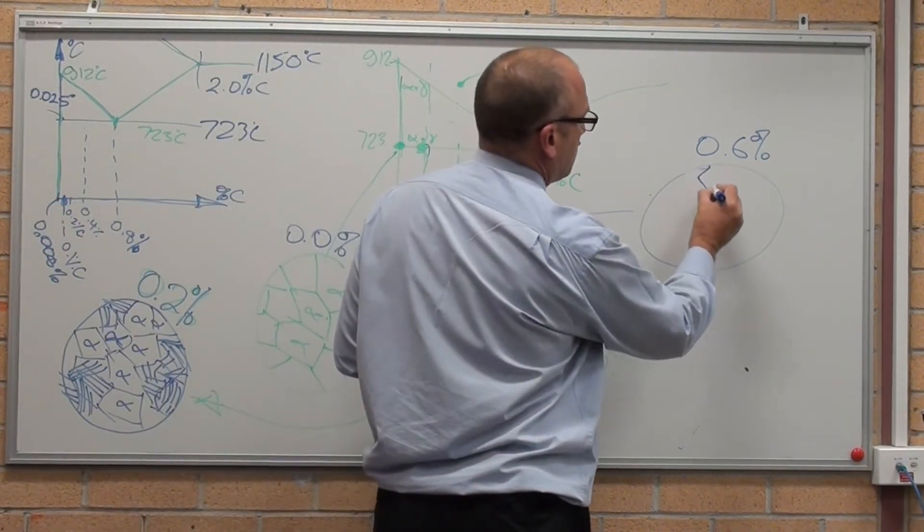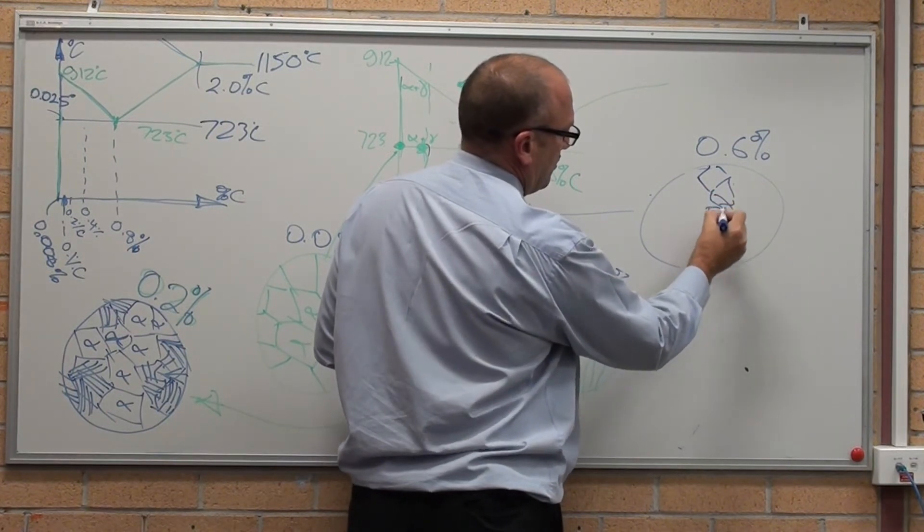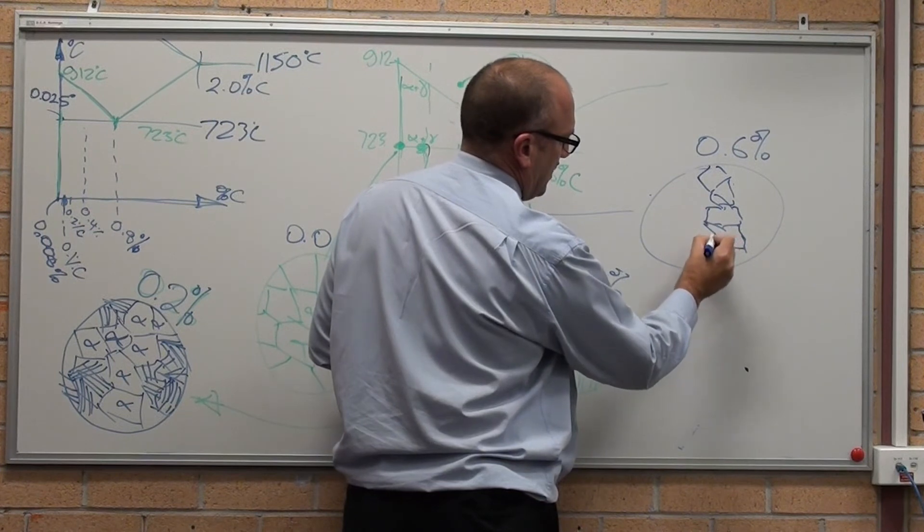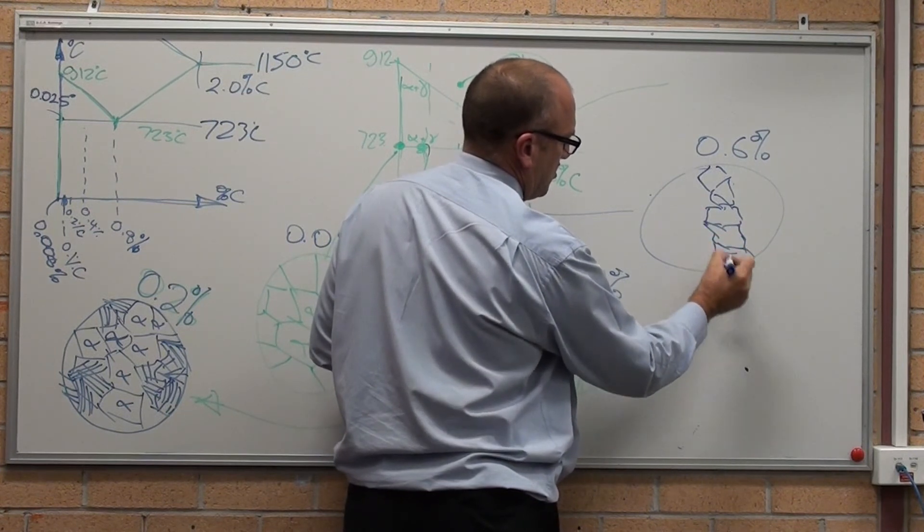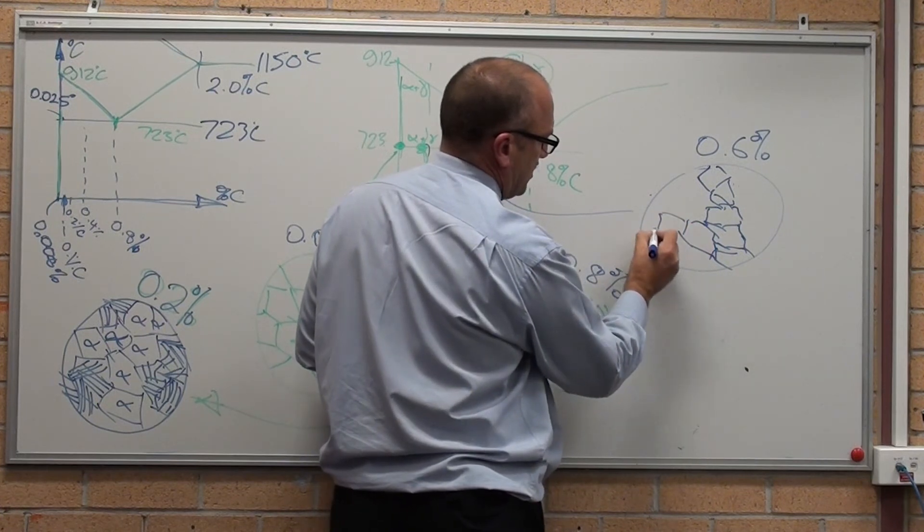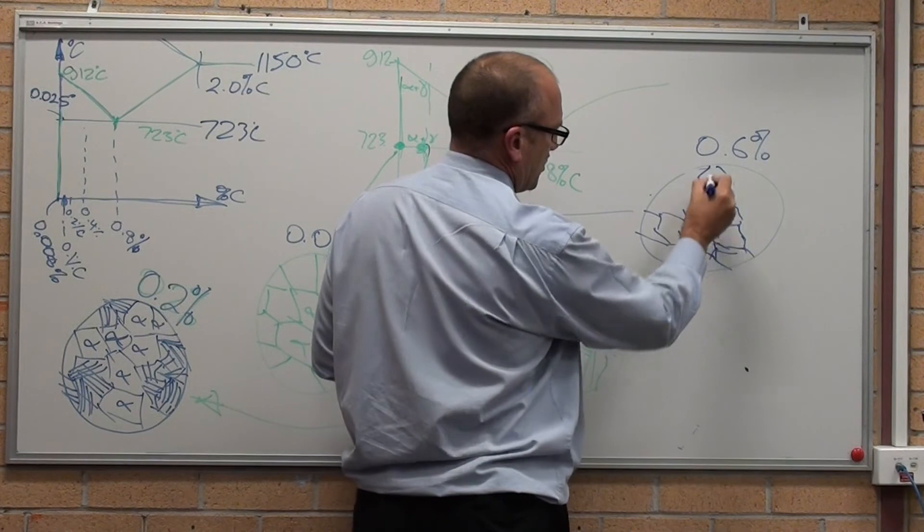So we just have a small amount of ferrite, drawn more or less as like a necklace type structure. Where everything's all connected, just like a necklace or a chain sort of structure.